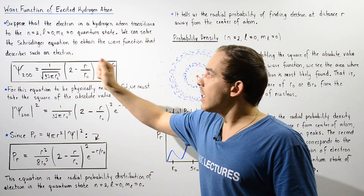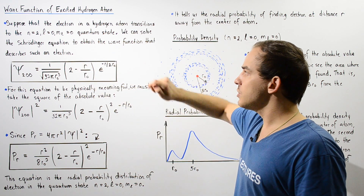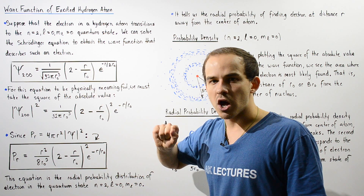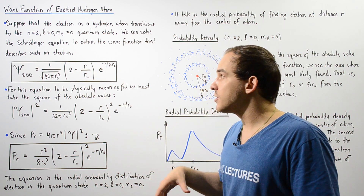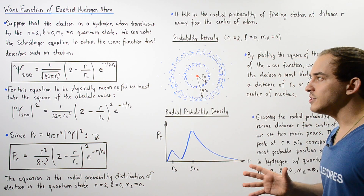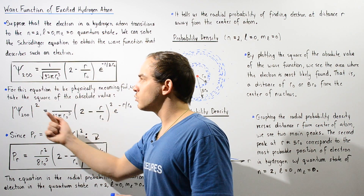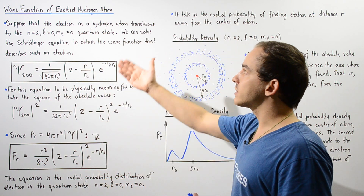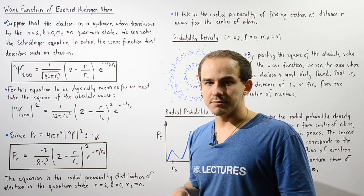We can solve Schrödinger's equation to obtain the wave function that describes such an excited electron. In this lecture, we're not going to worry too much about the process of solving this equation. Instead, we're simply going to give you the end result — this is the wave function that describes our excited electron within this quantum state.